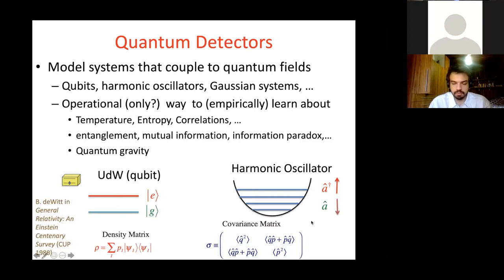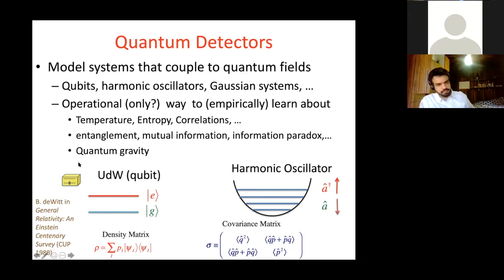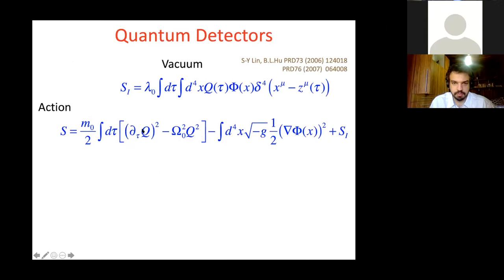A harmonic oscillator detector has been studied and one can discern relevant physical quantities from a covariance matrix. But in this presentation I'm going to be concentrating on what is very commonly used in the discipline: the Unruh-DeWitt detector, the UDW detector or qubit detector, which is simply a system that has a ground state and an excited state. A quantum dot could be an actual physical realization of such a thing. It is described most simply by an action given in terms of the qubit Q, the field Phi, and an interaction between them.